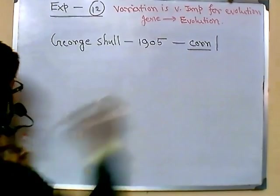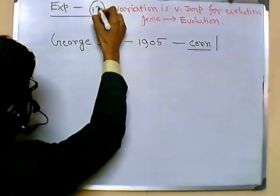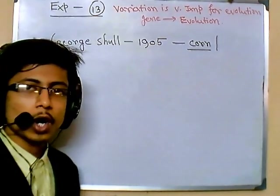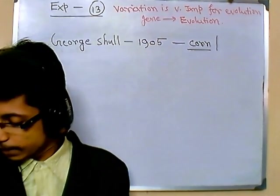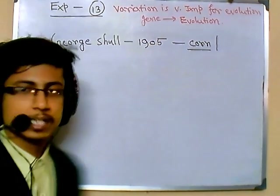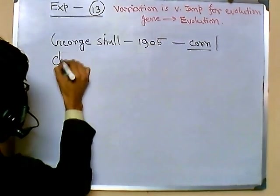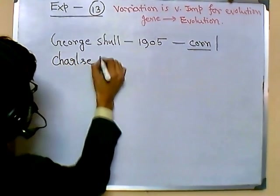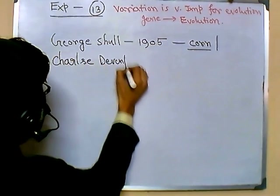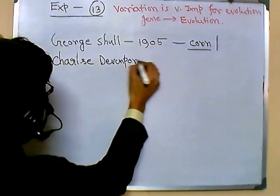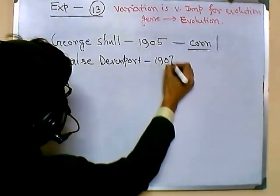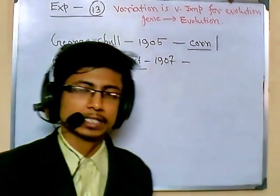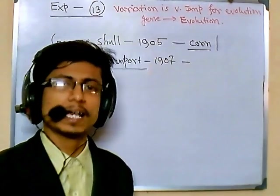In experiment number 13, we are going to talk about Charles Davenport. In 1907, he started to work with Mendelian genetics and was fascinated by it.